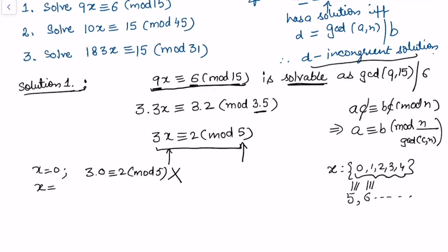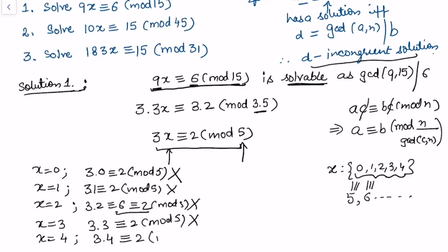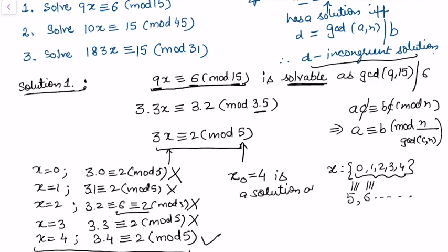If x = 0: 3·0 = 0 ≢ 2 (mod 5) — not satisfied. If x = 1: 3·1 = 3 ≢ 2 (mod 5) — not satisfied. If x = 2: 3·2 = 6 ≢ 2 (mod 5) — not satisfied. If x = 3: 3·3 = 9, and 9 − 2 = 7, not divisible by 5 — not satisfied. If x = 4: 3·4 = 12 ≡ 2 (mod 5) — this is true! So x₀ = 4 is our first solution.